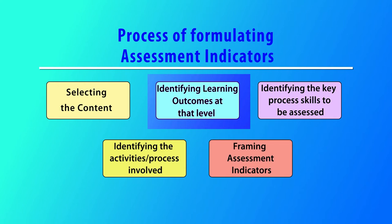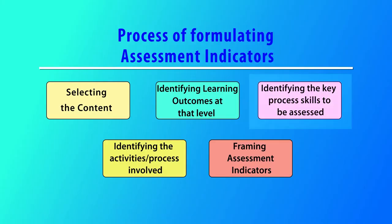Then for that content, we frame certain learning outcomes according to the level of the learner. For the same type of content, for class 6 the learning outcomes can be different, for class 7 they are different, and for class 9 they are different. If you read the documents issued by NCERT and CBSE on learning outcomes in science, you will learn how learning outcomes at different levels differ from each other. For that particular learning outcome decided for a level, the next step is to identify what key process skills need to be developed and assessed.